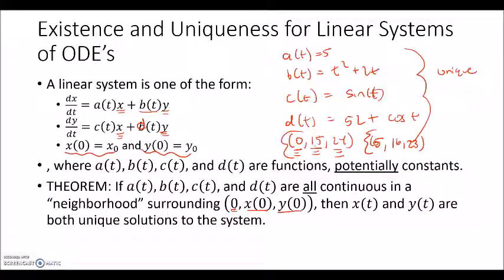This also helps us reason about systems — if we find equilibrium points, we can argue whether it's possible for those populations to ever cross through that equilibrium. We'll investigate systems more in the future, but this is a useful theorem for understanding the long-term behavior of population models.